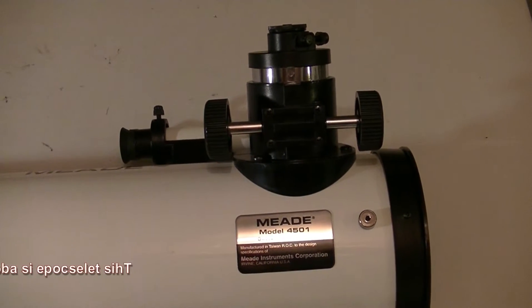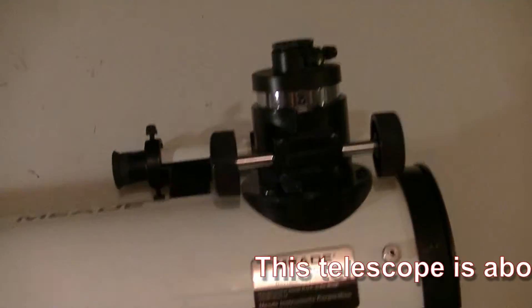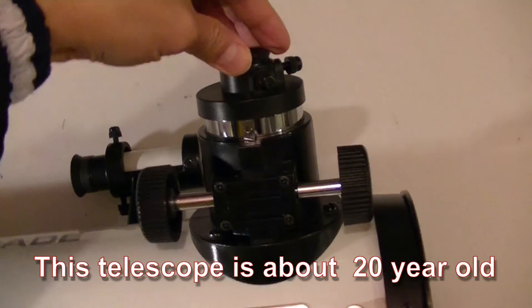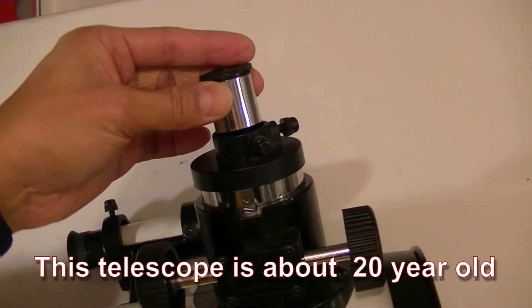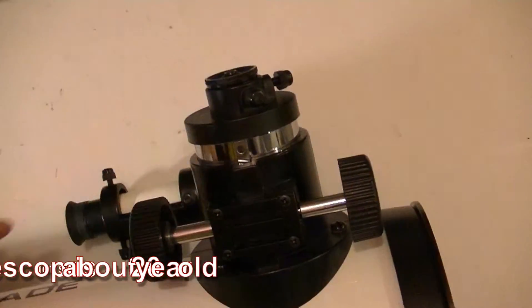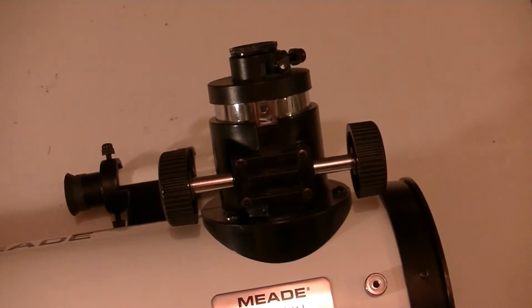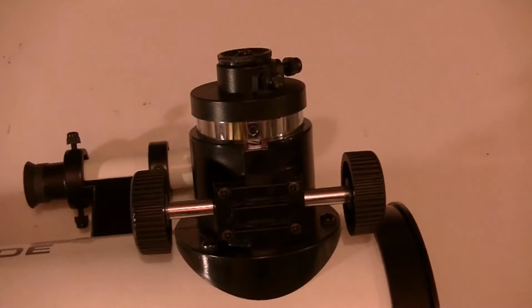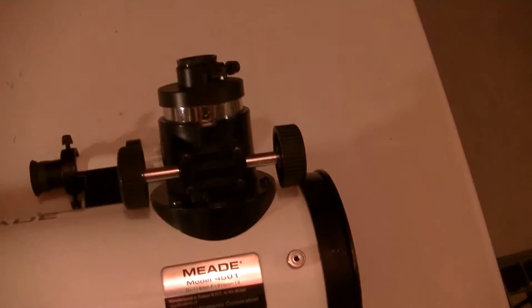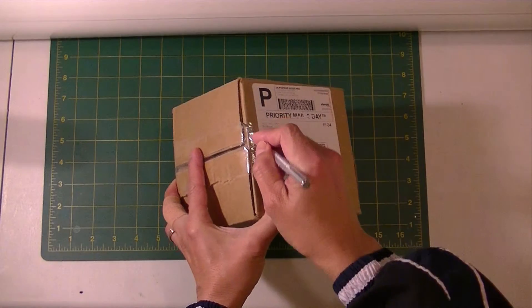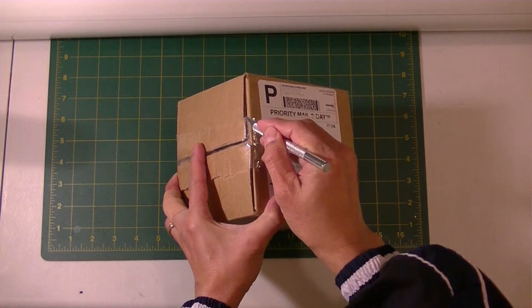This is a Meade telescope model 4501. It came with a 0.98 eyepiece, which I want to use for astrophotography. All the adapters use 1.5 inch or 1.25 inch eyepieces, so I want to change the focuser. I've ordered the focuser from Amazon.com.